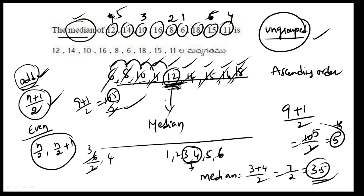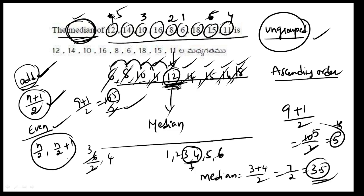So the numbers are arranged in ascending and descending order. The middle term is the same. The median term for an odd number of terms is n plus 1 by 2. For an even number of terms, find the two middle numbers, add them, and divide by 2 — that is the median.